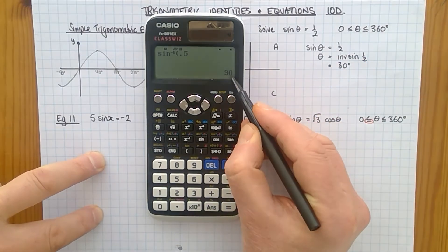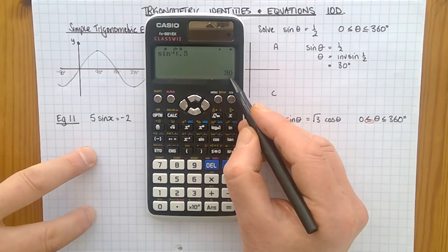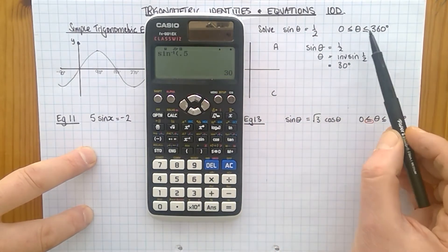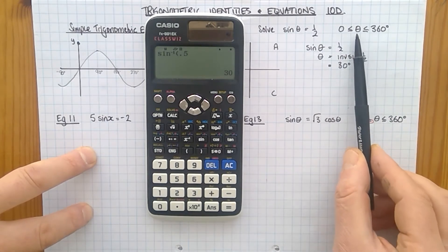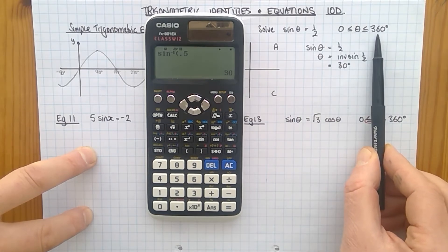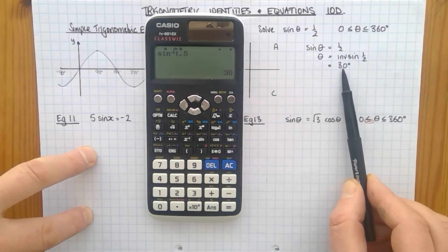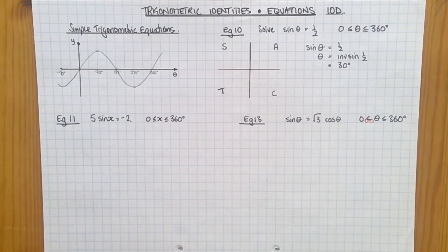Your calculator gives you what's called the primary value. There are in fact many, many answers. An infinite number of answers to this equation. Which is why each of these kind of questions gives you a range of values of theta, often called a domain. In this particular case, theta has to be between 0 and 360. Well, 30 is between 0 and 360, so that is one of the values. But there are other values, and it's those other values which can cause a little bit of grief.